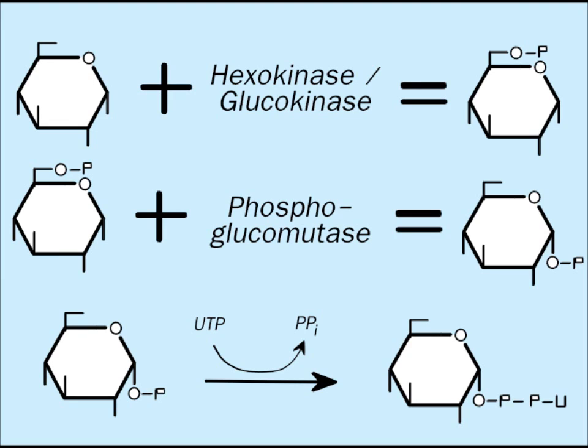Glycogenesis is initiated by the presence of glucose 6-phosphate. The phosphorylation of glucose as it enters the liver cell keeps the level of free glucose low. In other words, the liver has the ability to lower blood glucose concentration when it becomes too high. The hexokinase and glucokinase reactions are energy consuming because the glucose is activated, or phosphorylated, at the expense of ATP.